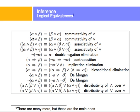We know that A and B — alpha and beta — is commutative, so it's the same as beta and alpha. Some very important rules are that if alpha implies beta, that is equivalent to saying not beta implies not alpha. That's called contraposition.